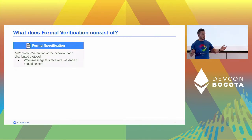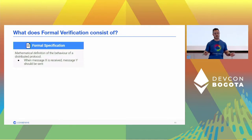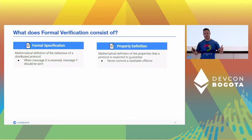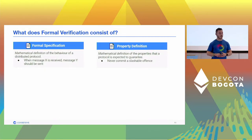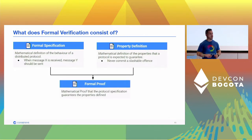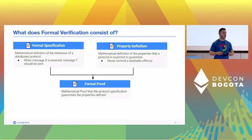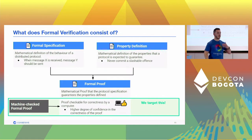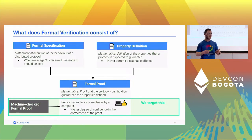Now I want to give you an idea of what formal verification consists of. You have a formal specification, which is essentially a mathematical definition of how the protocol is supposed to behave — when you receive message X you send message Y. Then you have a property definition, which is a mathematical definition of the properties the protocol is expected to guarantee, something like 'never commit a slashable offense.' These are packaged together in a formal proof. We take this a step further and work with machine-checkable proofs, meaning our proofs are checked by a computer, providing a higher guarantee that the proof is actually correct.